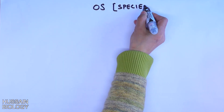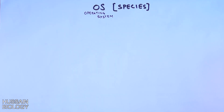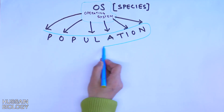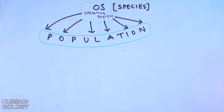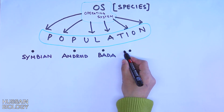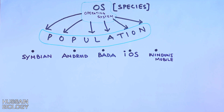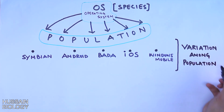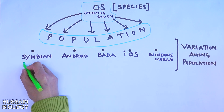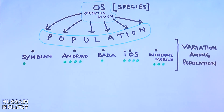Let's draw an analogy of natural selection with mobile operating systems. Here we treat operating systems as an example of species. Within this population of OS species we have different variations — Symbian, Android, Bada, iOS, and Windows Mobile. These are all variations of OS species within the population. Phenotypically, Symbian, Bada, and Windows Mobile have got fewer features than Android and iOS, which translates into a positive advantage for survival and reproduction in this analogy.